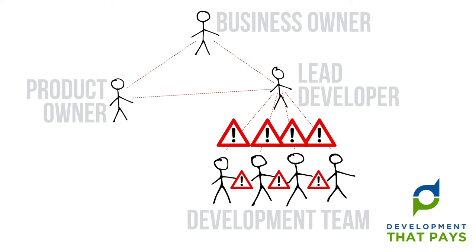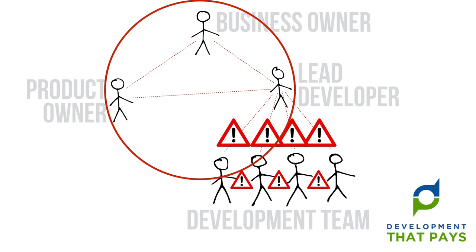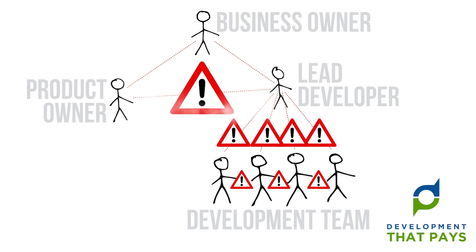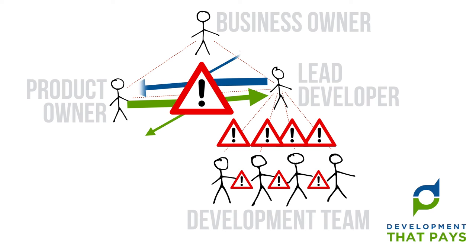Which brings us on to the relationships between these three players. In my opinion, the relationship between the product owner and the lead developer really is the big one. The communication here must be of high quality with a minimum of reflection — not just from the product owner to the lead developer, but also from the lead developer back to the product owner.